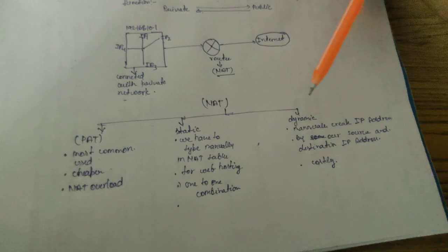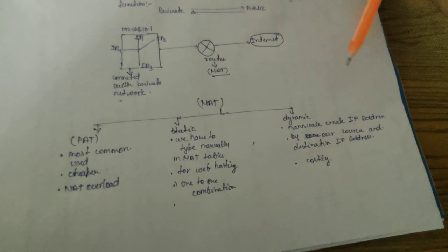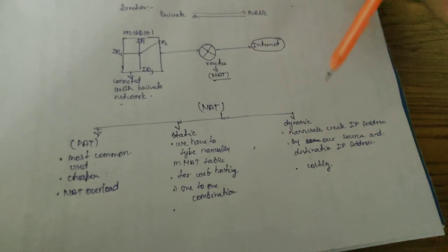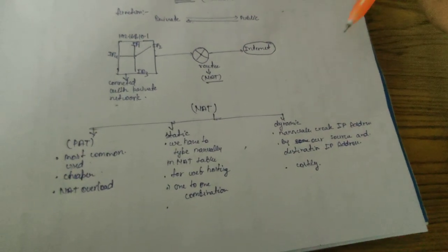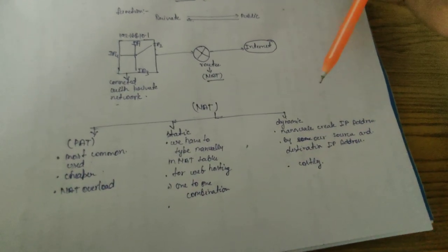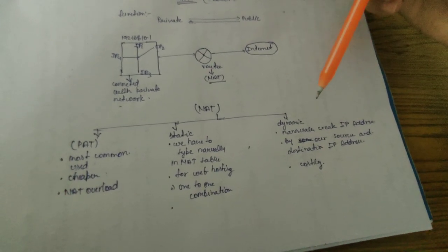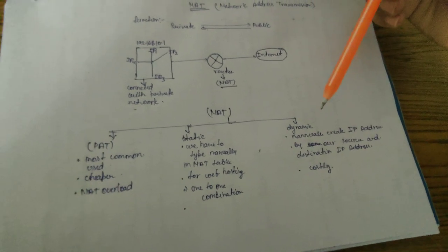And in Dynamic, it manually creates our IP addresses by getting our port numbers, IP addresses, and source numbers to convert our IP address. And it is also costly, so it is not mostly used.